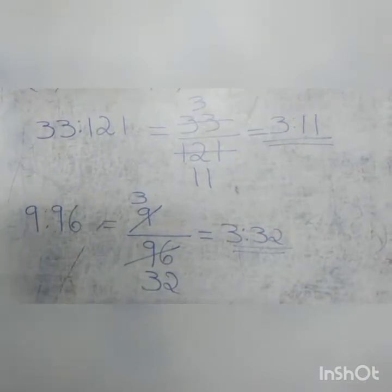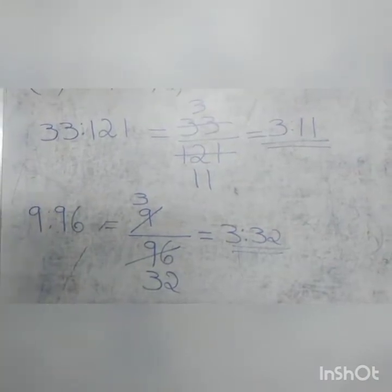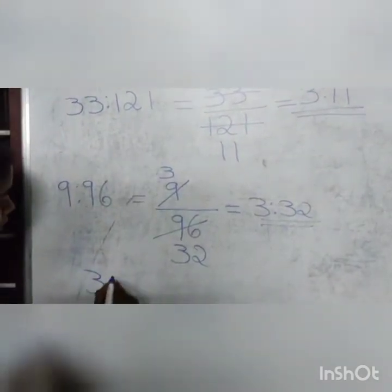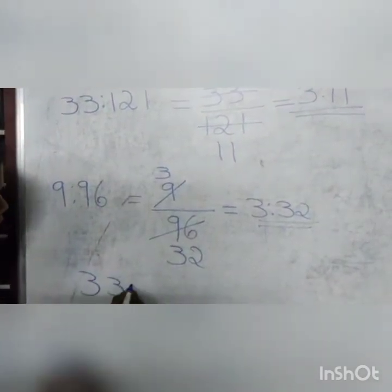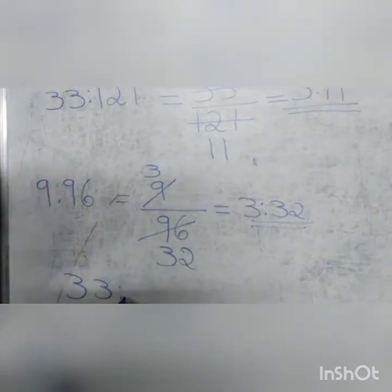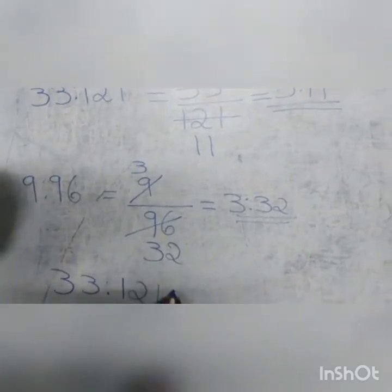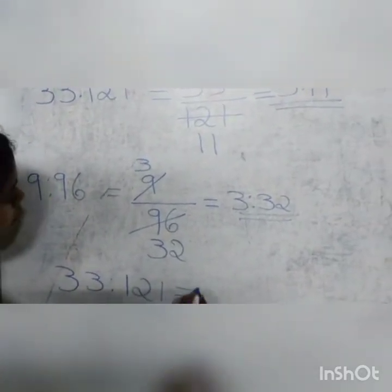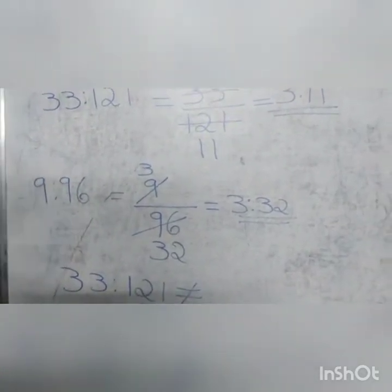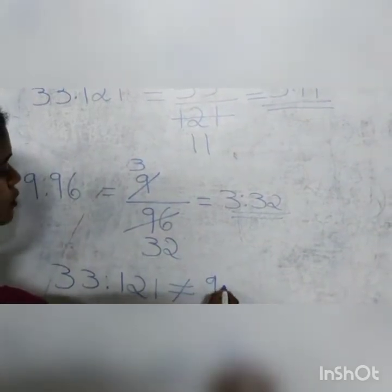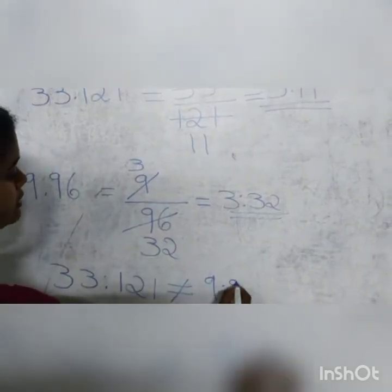We can write this as: 33 is to 121 is not in proportion with 9 is to 96.